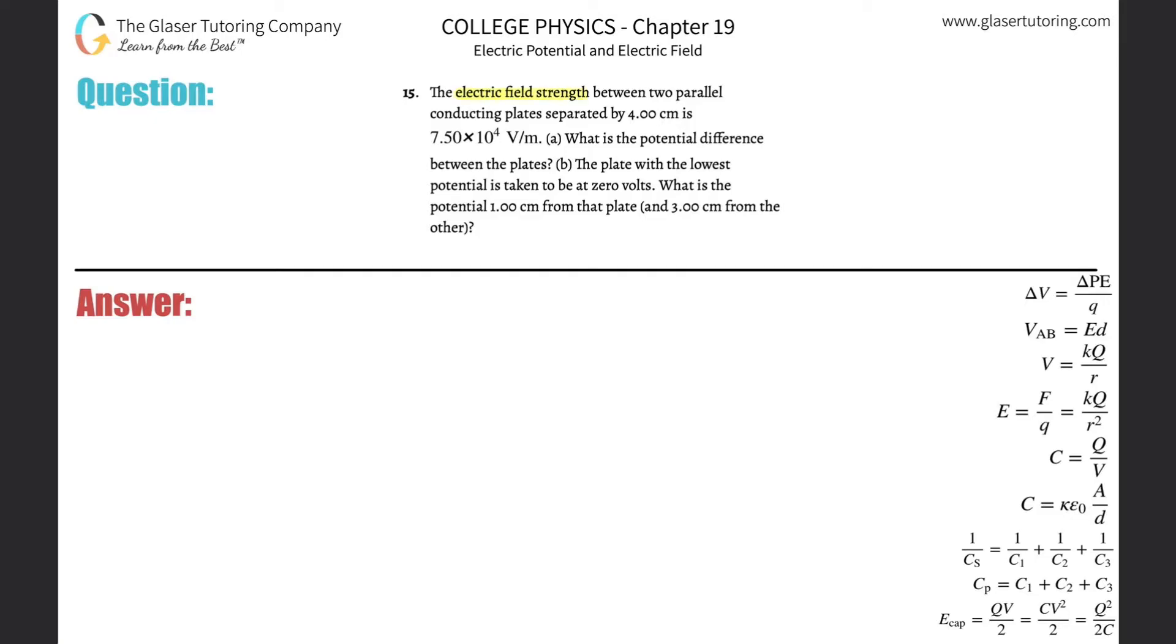Number 15, the electric field strength between two parallel conducting plates separated by four centimeters is 7.5 times 10 to the 4 volts per meter. Letter A, what is the potential difference between the two plates?